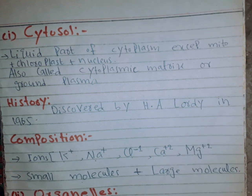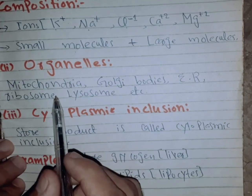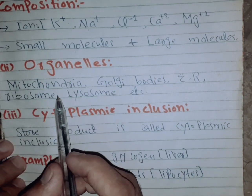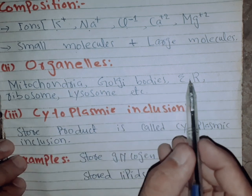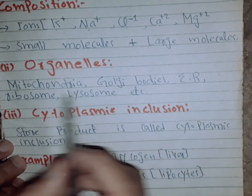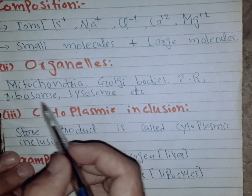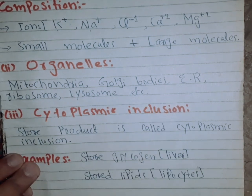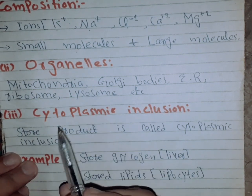The second part of cytoplasm is organelles. Organelles include mitochondria, Golgi bodies, endoplasmic reticulum, ribosomes, and lysosomes. Each organelle has its own specific function.